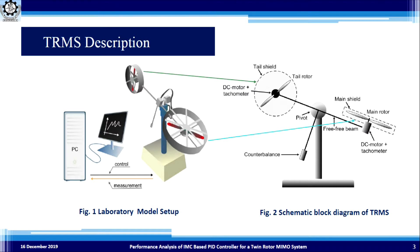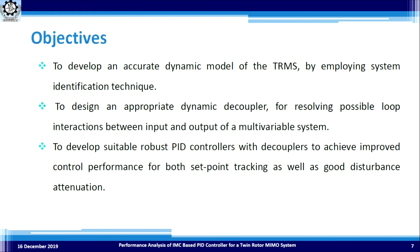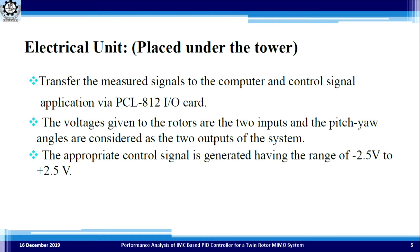Apart from the mechanical unit, the electrical unit is placed under the tower. The electrical unit allows the measurement signal from the Twin Rotor MIMO System to the PC, and the control signal is transferred via the PCL 812 input-output card. The appropriate control signal is generated with a range of minus 2.5 volts to 2.5 volts. The voltages given to the rotors are the two inputs to the system, and the horizontal and vertical angles — pitch and yaw angles — are the two outputs of the system.